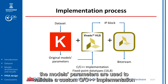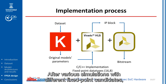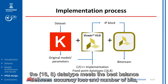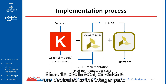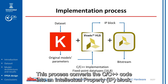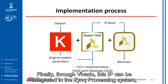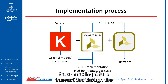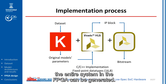Once the training process was concluded, the model's parameters are used to validate a custom C/C++ implementation of the EEGNet-based network using fixed-point data types. After various simulations with different fixed-point candidates, the 16-8 data type meets the best balance between accuracy loss and number of bits, and thus is the one selected. It has 16 bits in total, of which 8 are dedicated to the integer part. When the HLS simulation is completed, the network is ready to be synthesized. This process converts the C/C++ code into an intellectual property block, which has a hardware description that maps the C/C++ algorithmic description. Finally, through Vivado, this IP can be integrated in the Zynq processing system, enabling future interactions through the CPU with the FPGA-implemented neural network, and the bitstream file that builds the entire system in the FPGA can be generated.